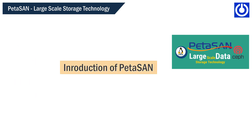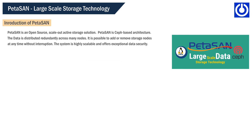Introduction of PETA SAN. PETA SAN is an open-source, scale-out active storage solution. PETA SAN is CIF-based architecture. The data is distributed redundantly across many nodes. It is possible to add or remove storage nodes at any time without interruption. The system is highly scalable and offers exceptional data security.